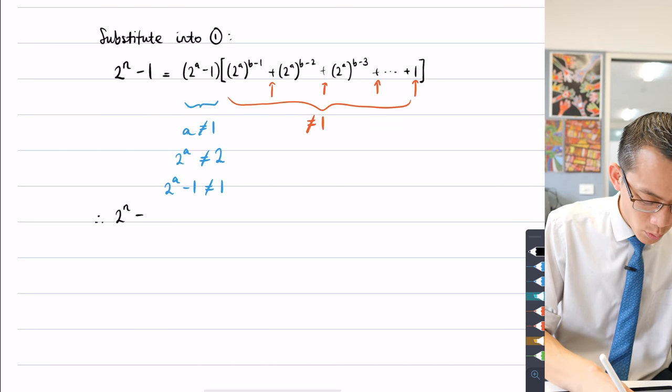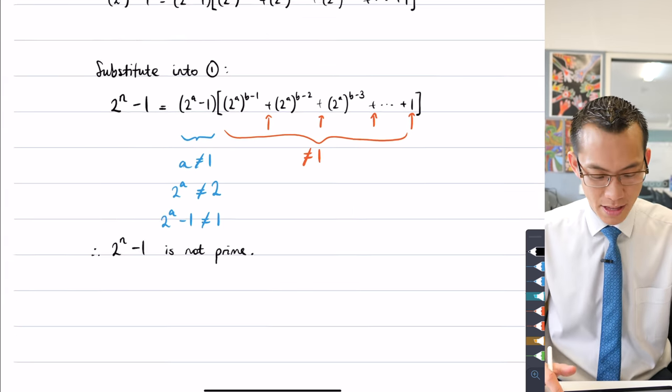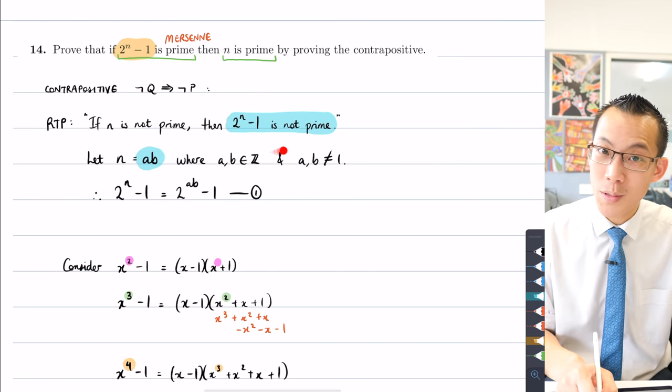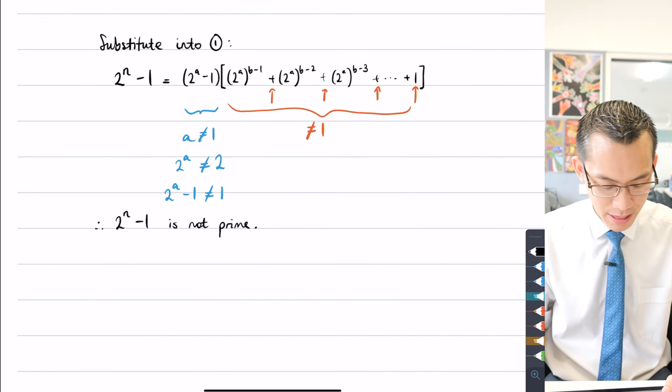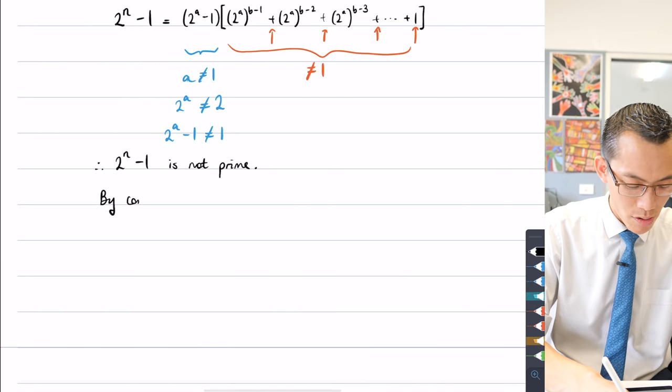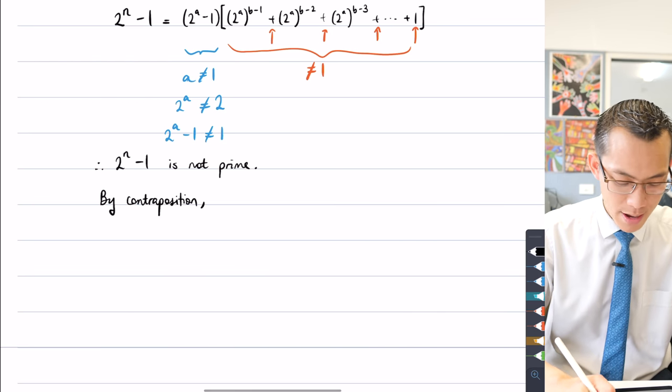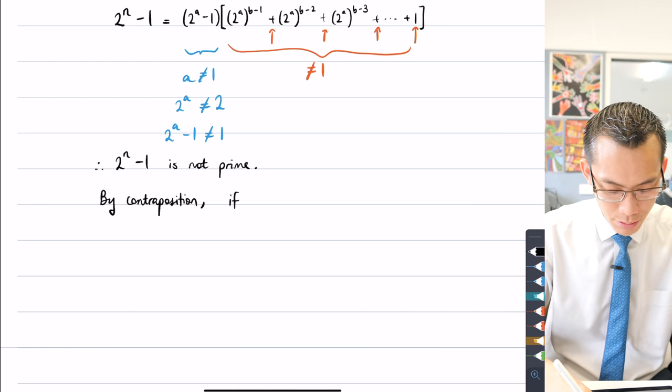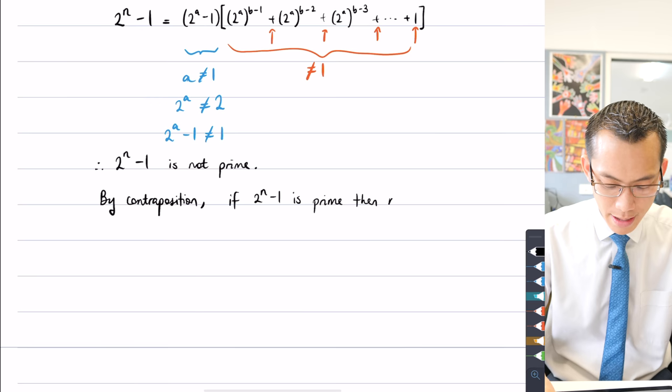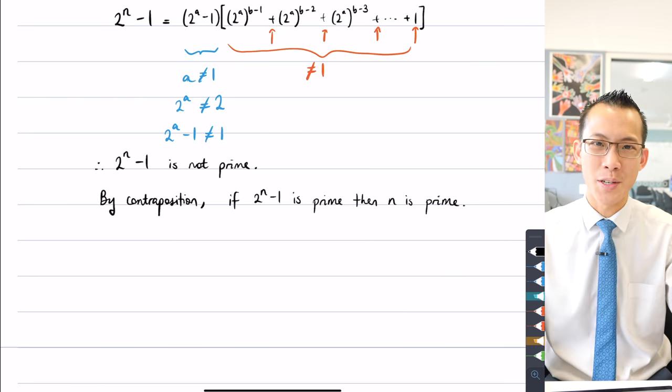So therefore, I can say, therefore, 2^n - 1 is not prime, which is exactly what I was setting out to prove in the contrapositive right here. So I started with this, I proved that this was the case, I'm pretty much finished. All I need to say at the very end is, by the law of the contrapositive, or by contraposition is another concise way of saying, which is also equivalent, I can say, if 2^n - 1 is prime, then n must be prime. And there's that proof of that lovely result about Mersenne primes.